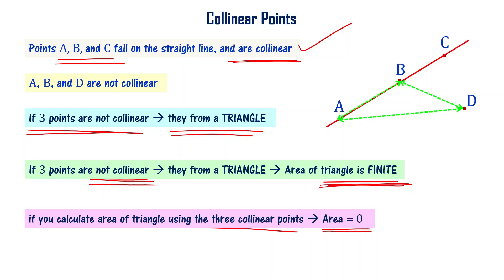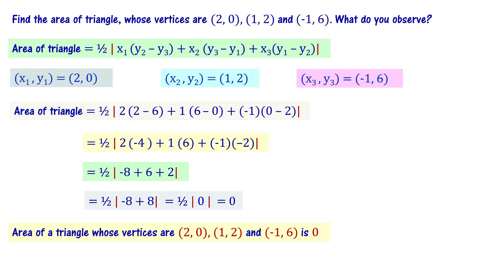You can see in the problem area equal to zero. And then, area equal to zero meaning, the given points (2,0), (1,2), and (-1,6), are collinear points. This is what you observe.